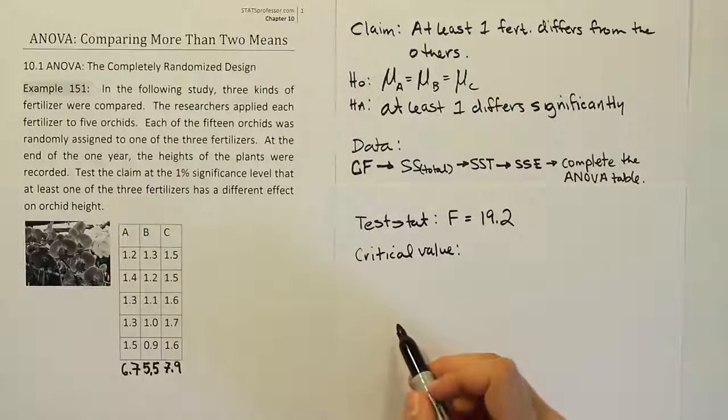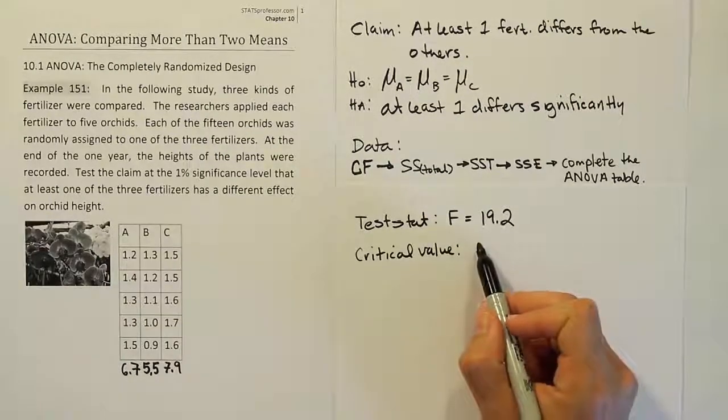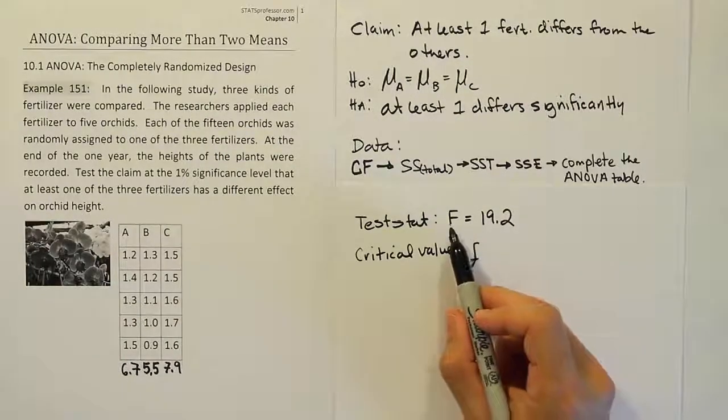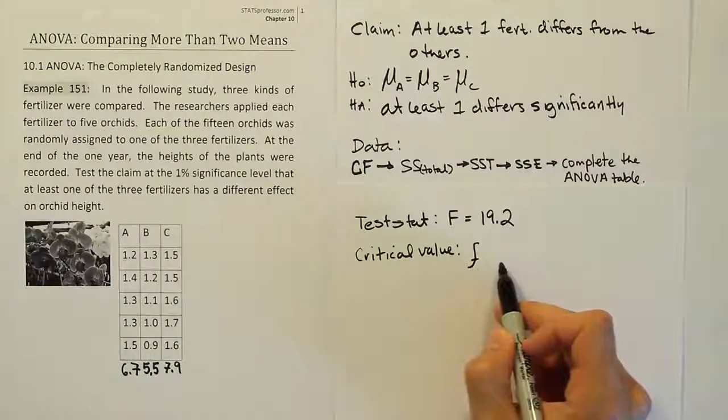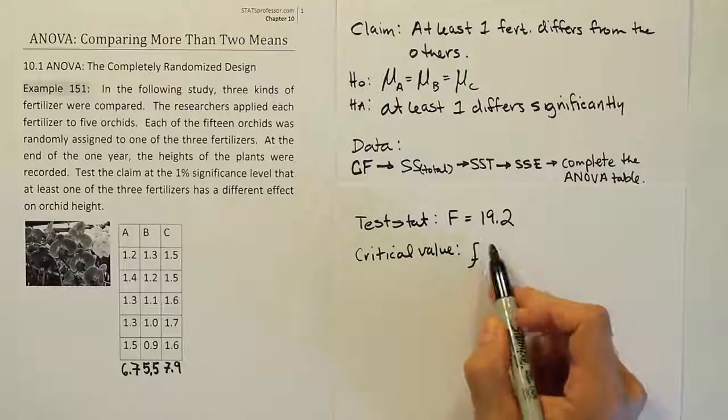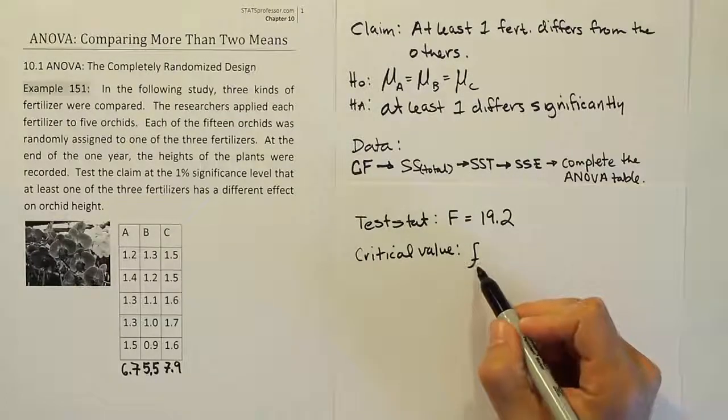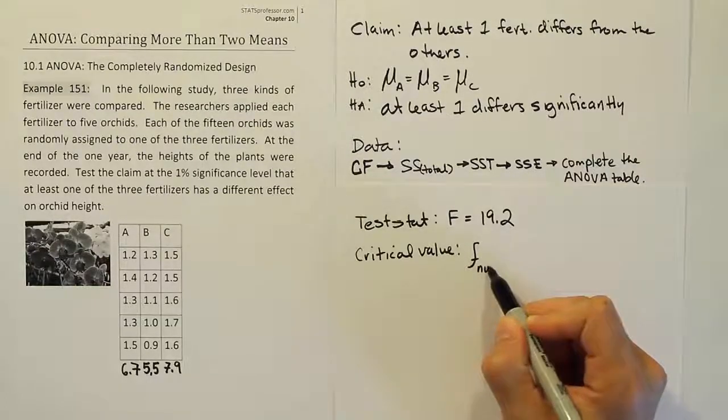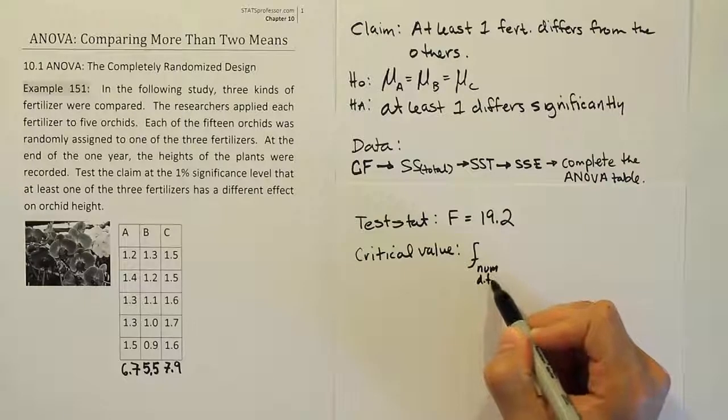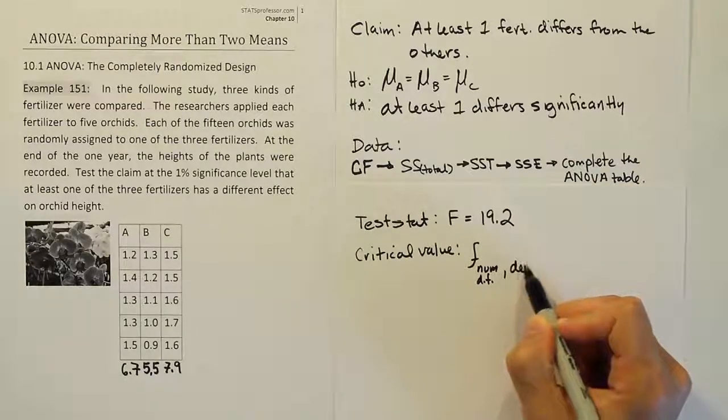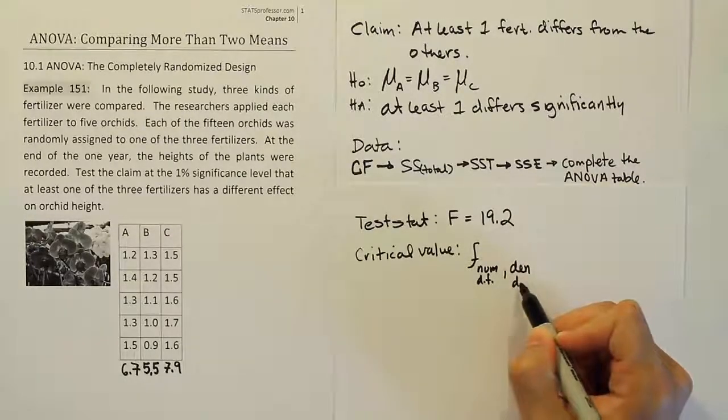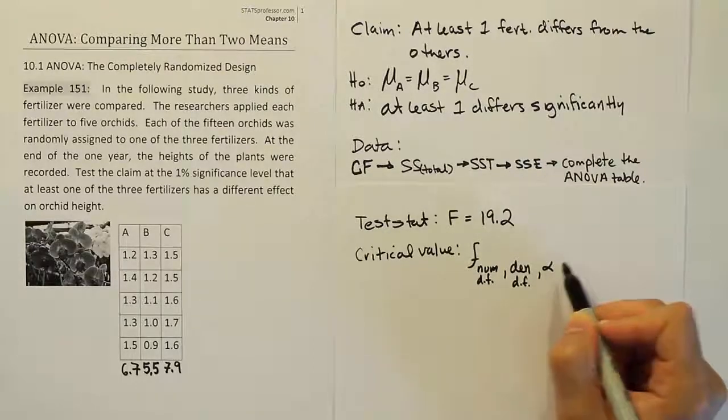Okay, so for the critical value, we're going to have to basically look up an F critical value, right? If we're going to compare an F test stat to an F critical value, we're going to need an F value from our table. And we're going to have numerator degrees of freedom, denominator degrees of freedom. So we're going to need to worry about that, right? So numerator degrees of freedom. Then we have denominator degrees of freedom. And then we have, of course, alpha.